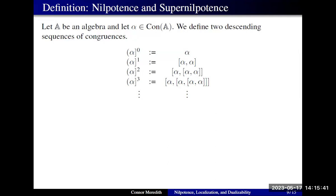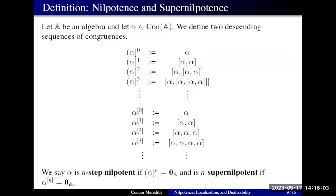We also have a second commutator available to us — this higher-arity commutator. So instead of just repeatedly using our binary commutator to define a sequence of commutators, we can instead use higher and higher arities of commutator. If the first sequence of congruences reaches zero, we'll say alpha is nilpotent. If this second sequence reaches zero, we'll say alpha is super nilpotent. There's no general implication between nilpotence and super nilpotence, but for finite algebras, super nilpotence implies nilpotence.